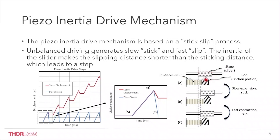The friction rod has one end connected to the piezo actuator and one tip contacting the slider, so the rod can be pushed or pulled by the piezo actuator.